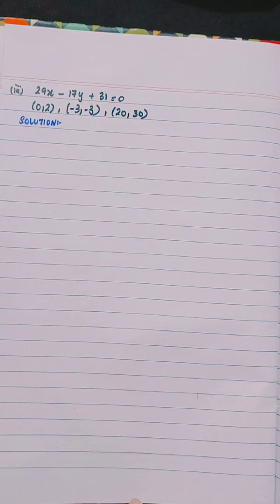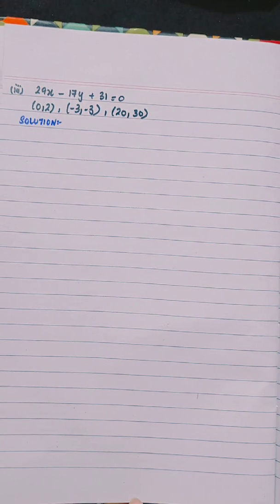Part 3 is 29x minus 17y plus 31 equals to 0 and points are (0,2), (-3,-3), and (20,30). Similarly, this will be solved the same way. You can try this. Thank you.